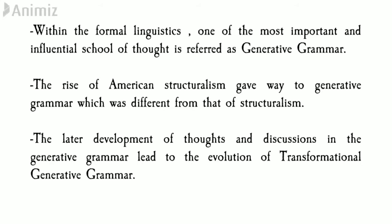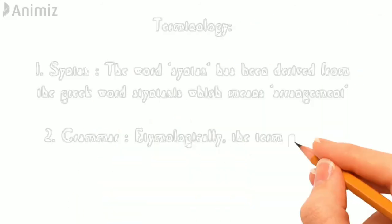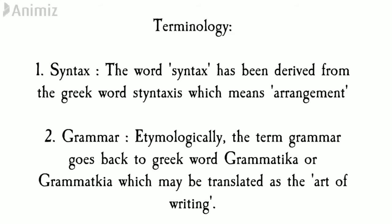The next segment covers terminologies — two key words that help us understand generative grammar. The first is syntax, derived from the Greek word syntaxis, which means arrangement. It implies the way in which words are arranged so as to reveal relationships of meaning within sentences and often between them. It studies combinations of words, including word structure and sentence structure.